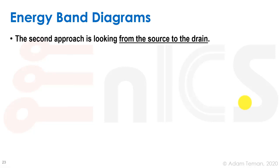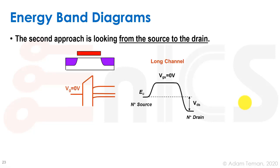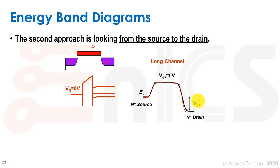A second approach is to look from the source to the drain. We take our MOSFET with the source, drain, and gate, and when we haven't put any voltage on the gate — flat band — we have some energy at the source, a large potential barrier at the gate region, and the drain at a higher voltage causing the energy bands to go lower. This big potential barrier is what prevents electrons from crossing, so we have no conduction when VGS is zero.